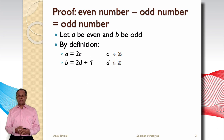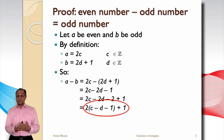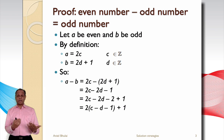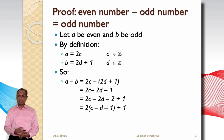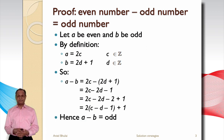That means that a minus b equals 2c minus (2d plus 1), which is of the form 2d plus 1 — the definition of an odd number. Hence a minus b is an odd number.